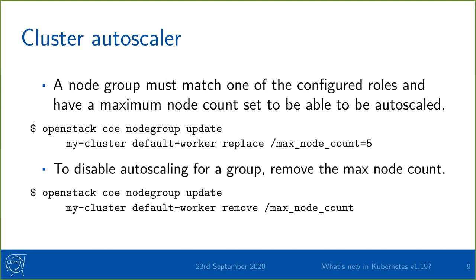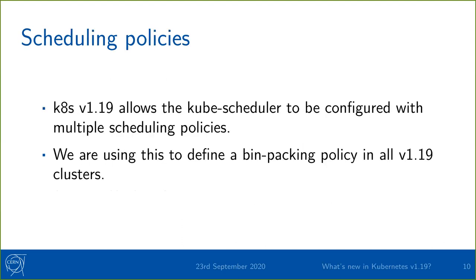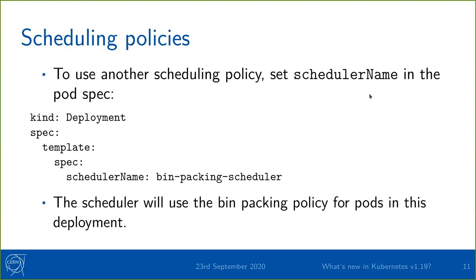That's a quick overview of cluster auto scaling. If you want, you can watch the last webinar that went further in depth. Now let's look at scheduling. In 1.19, you can have multiple scheduling policies defined in a cluster, so we can define extra policies by default that are available if you want them. To make the best use of this with the cluster auto scaler, we can define a bin packing policy that uses the smallest number of nodes possible for a given deployment. To do that, you set the scheduler name in the pod spec.